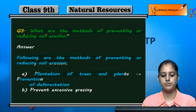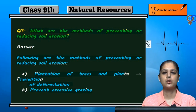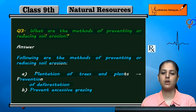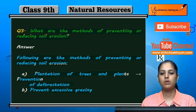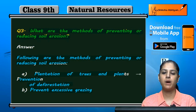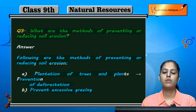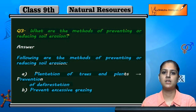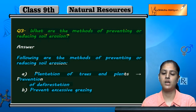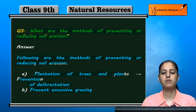The next method is to prevent excessive grazing. If animals overgraze, the grass is lost and the binding force of the soil is reduced. By ensuring that grazing is done properly and not excessively, soil erosion can also be prevented.